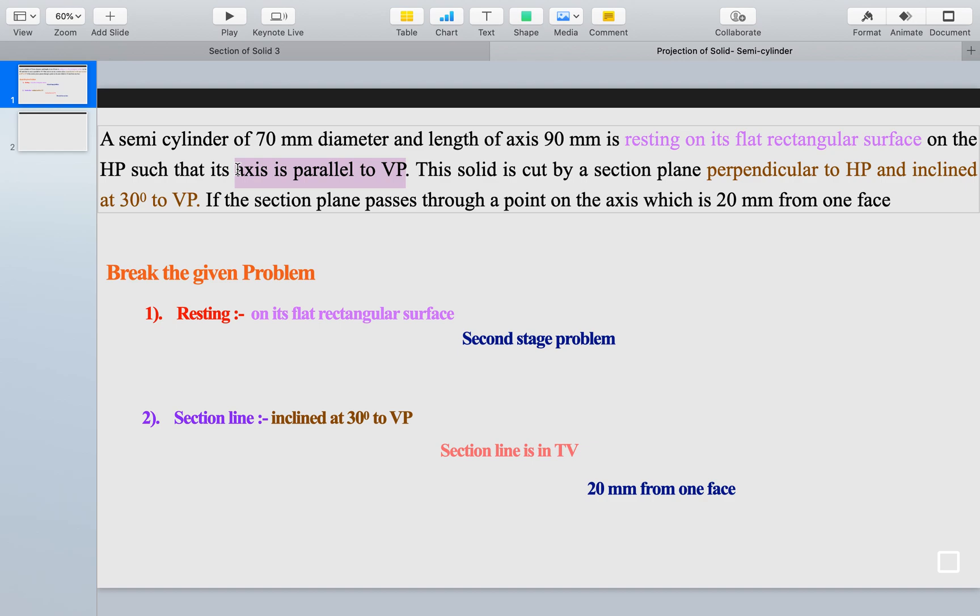So definitely if it is resting on HP, its axis is parallel to VP. Now we've got information that this is a second stage problem and we can draw this semi-cylinder up to the second stage.